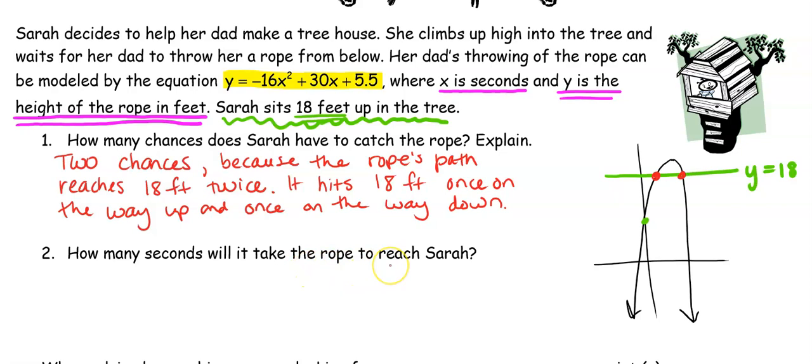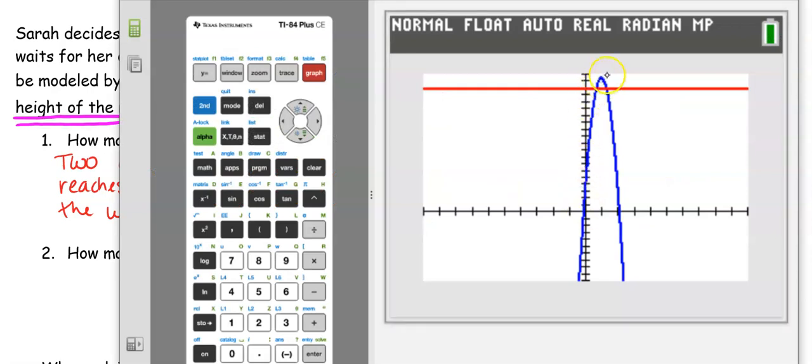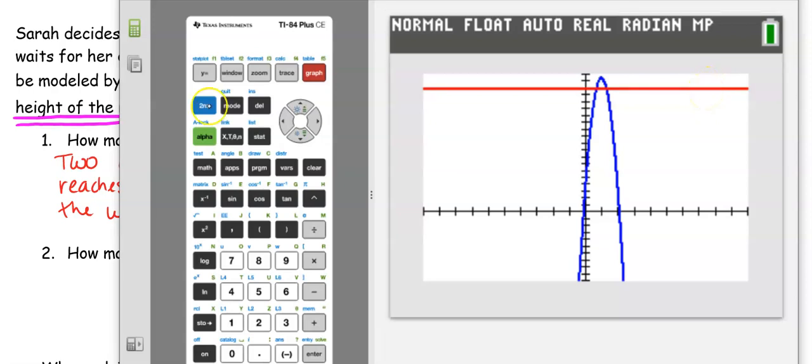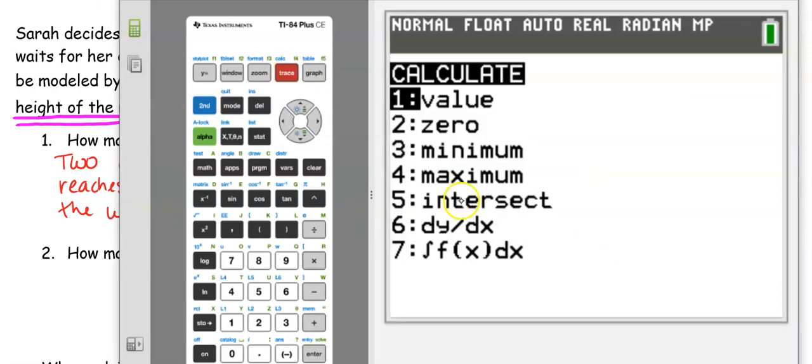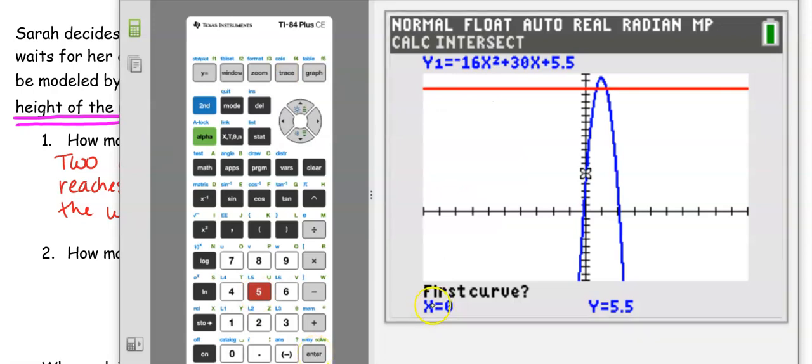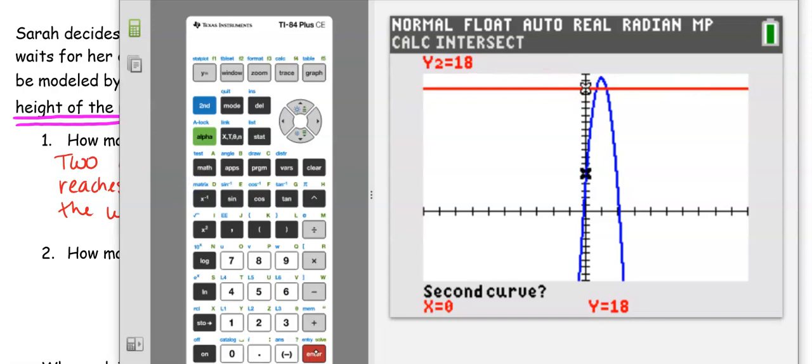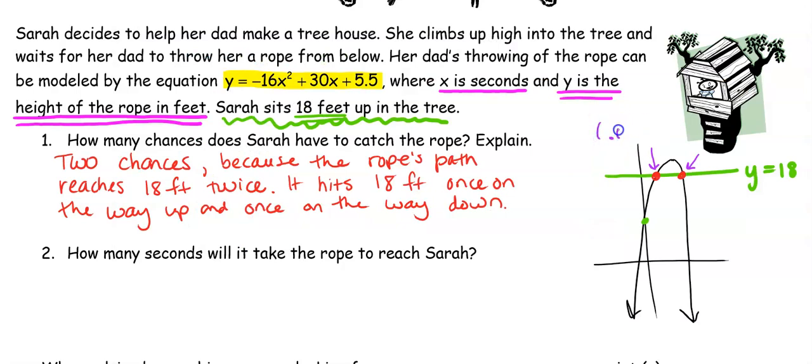How many seconds will it take the rope to reach Sarah? So again we have these two different circumstances. One right here and one right there. We're going to find both of those. So in our calculator we're going to find out where the parabola is intersecting that line of 18. We go to second trace number five intersection. Remember it's going to walk you through it. First curve. The first curve is y1. That's our parabola. Yeah we want the intersection between the parabola and that horizontal line. When you hit enter it's going to automatically bounce to y2 which is that horizontal line. And then guess. So we see that the first point is at .625, 18. And again it makes sense that it's at 18 because that's the height of Sarah. So it takes .625 seconds. And this is on the way up.